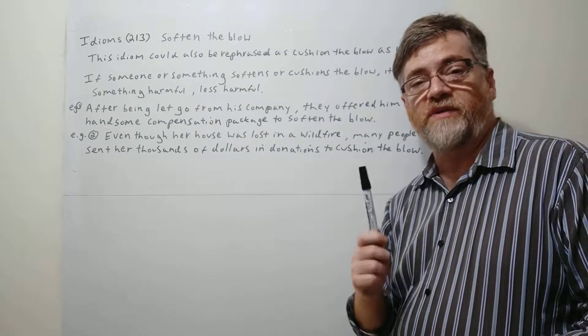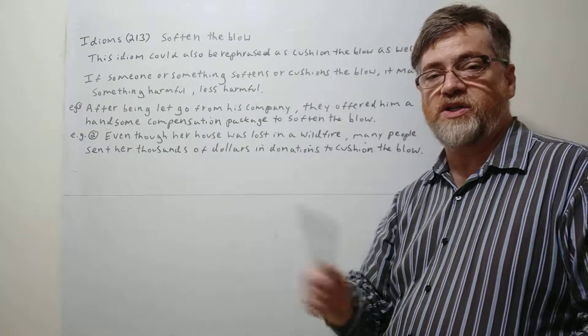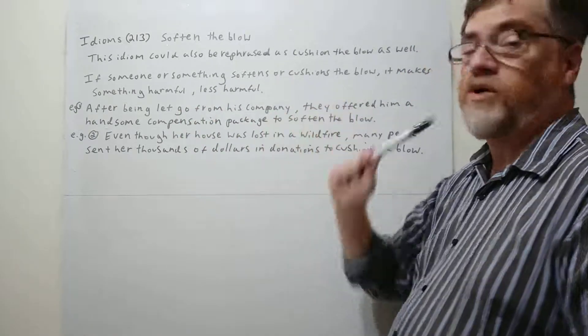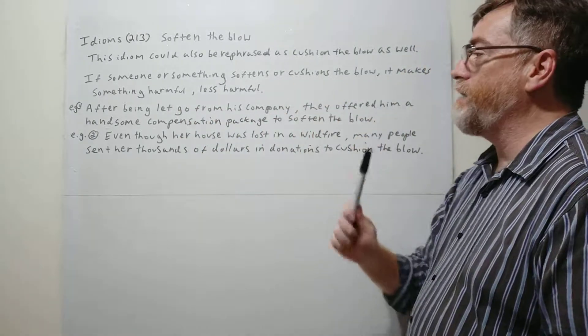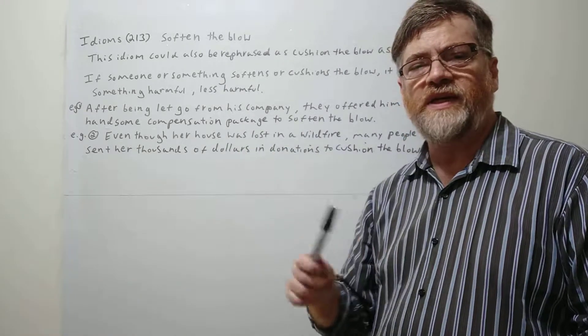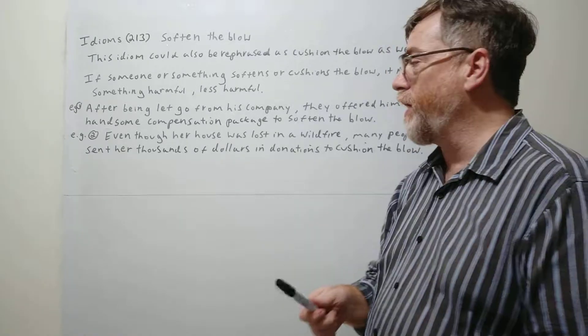But usually when we say to soften the blow is you do something to make it seem not as bad, not as harsh, not as harmful. So if someone or something softens or cushions the blow it makes something harmful less harmful or you feel less pain or it's less bad in some way.